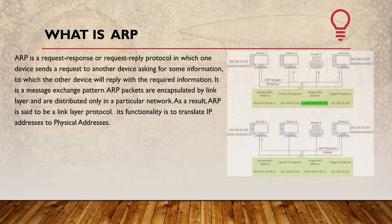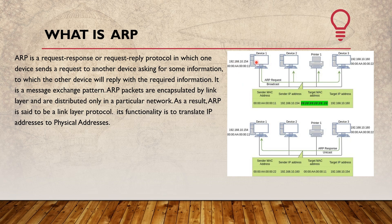Let's walk through an example. Device 1 and Device 3 need to communicate. Device 1 has IP address 192.168.10.154, and the destination, Device 3, has IP address 192.168.10.160. We need to find out the MAC address associated with that destination IP — we will call this the peripheral MAC address location.